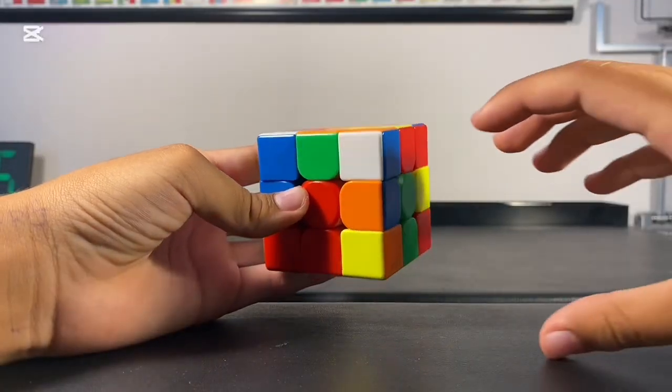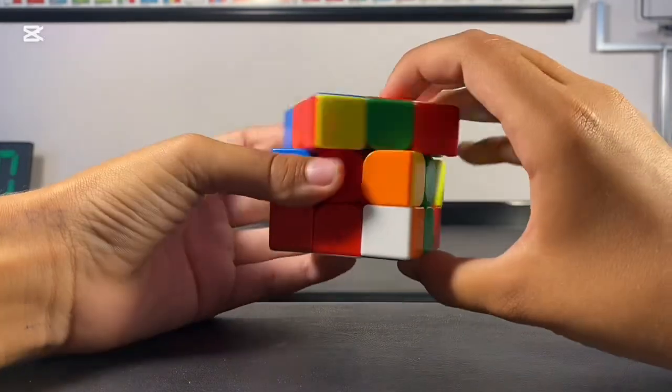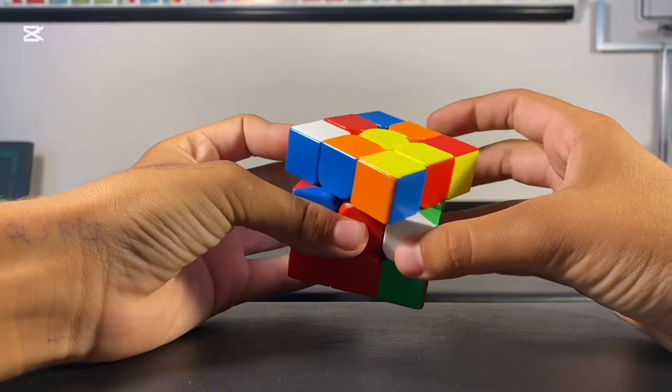After that, you want to do the first two layers. To do that, you need to find a corner with a white sticker, look at the other colors, and place the corner like this in the middle of the other colors.